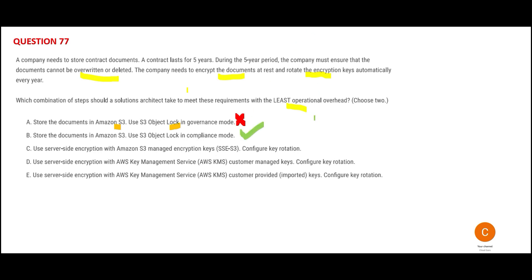We should choose compliance mode because in compliance mode, the retention mode can't be changed and the retention period can't be shortened. Nobody — not even the most powerful people — can delete or alter it. So governance mode is wrong, compliance mode is correct. We've now addressed the problem of preventing overwriting or deletion. Next we need to address rotating the encryption keys, which options C, D, and E are trying to solve.